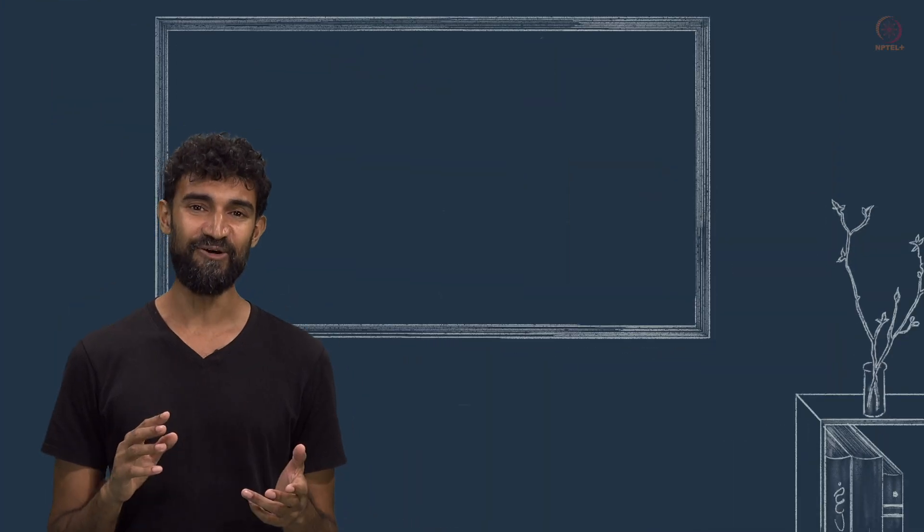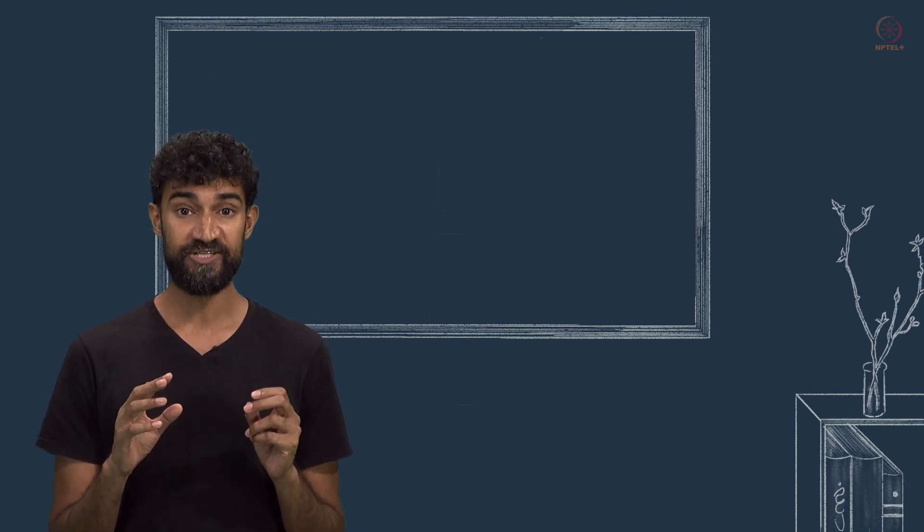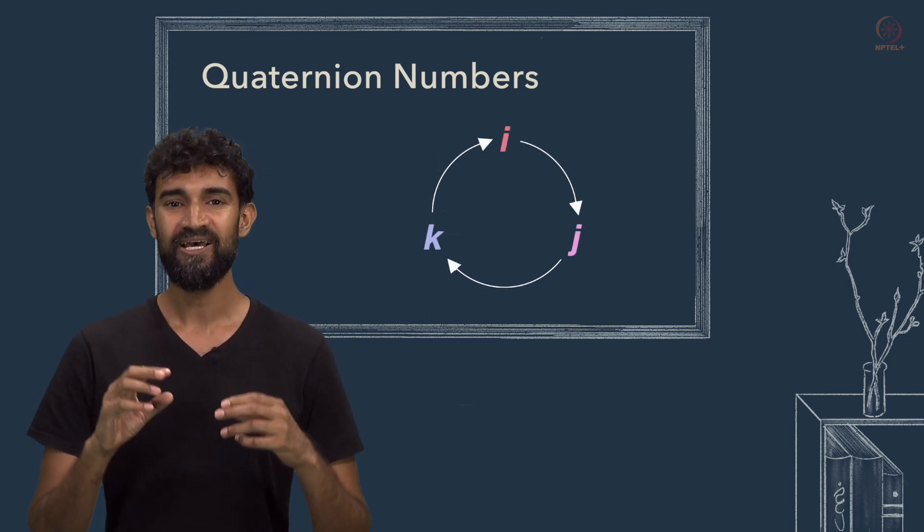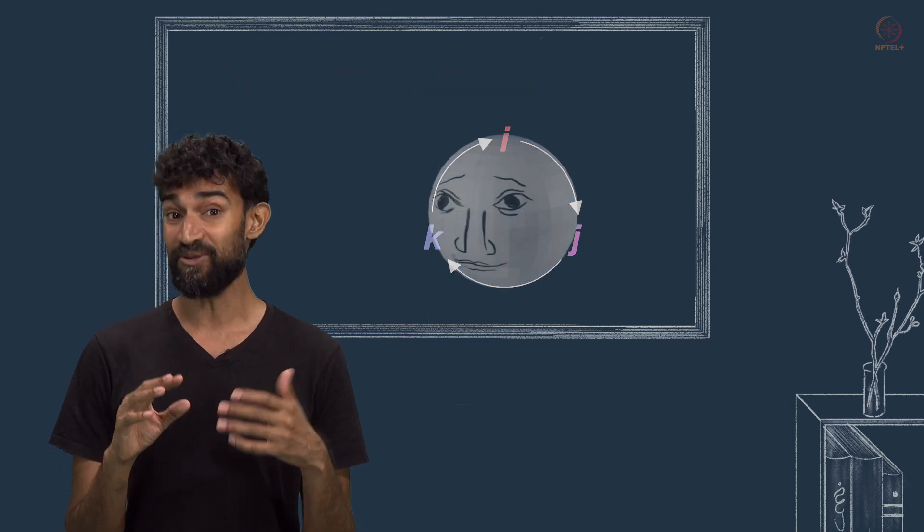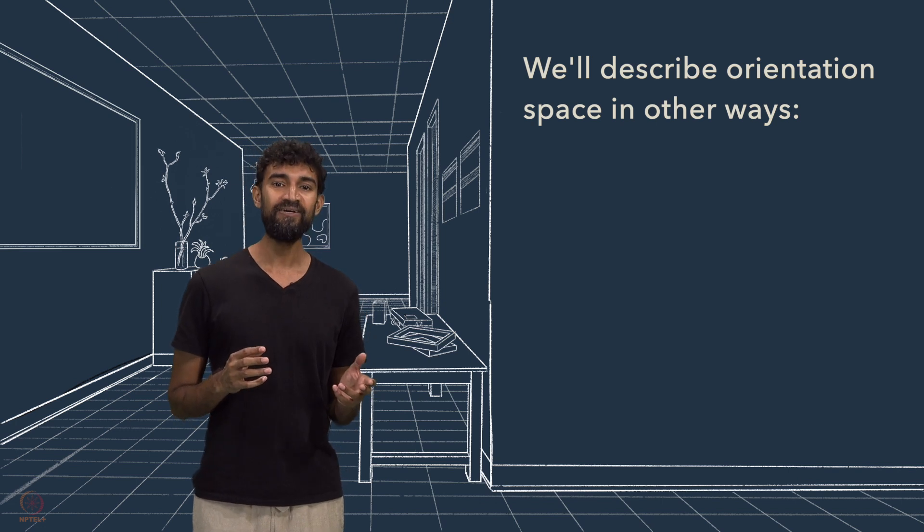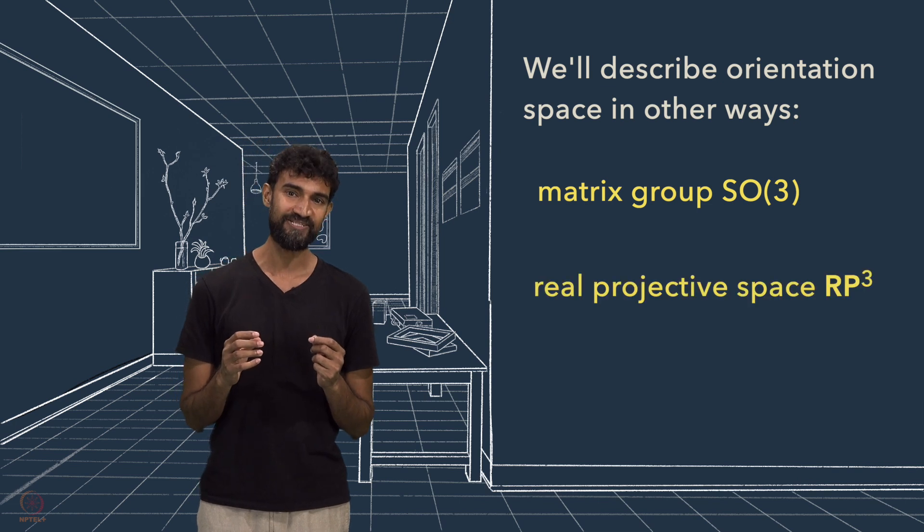In the later videos, we'll translate these discoveries into a symbolic algebraic form known as the quaternion numbers. Using the quaternions, you can communicate spatial orientations to a computer, which is crucial if you want to animate a 3D character, or manipulate a camera, or control a robotic arm. Finally, we'll describe orientation space in other geometric ways, such as the matrix group SO3 and the real projective space RP3.